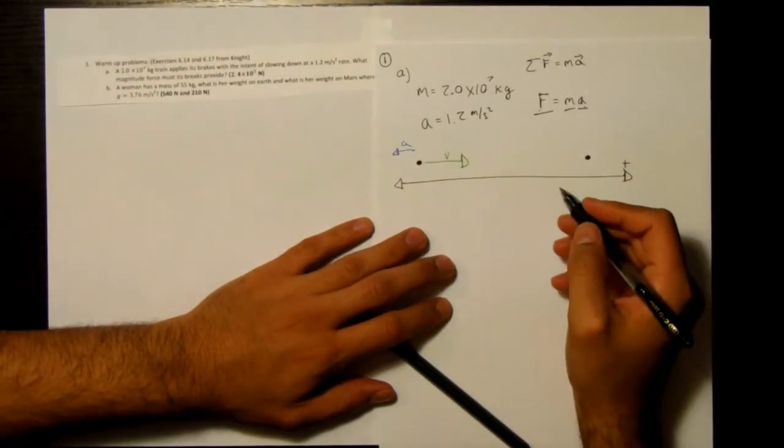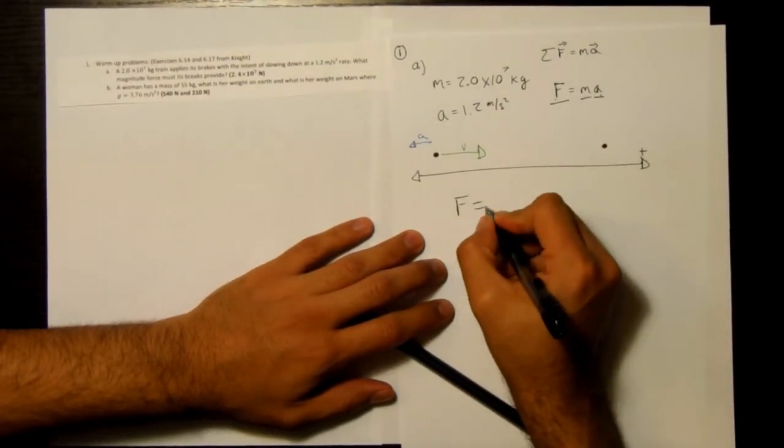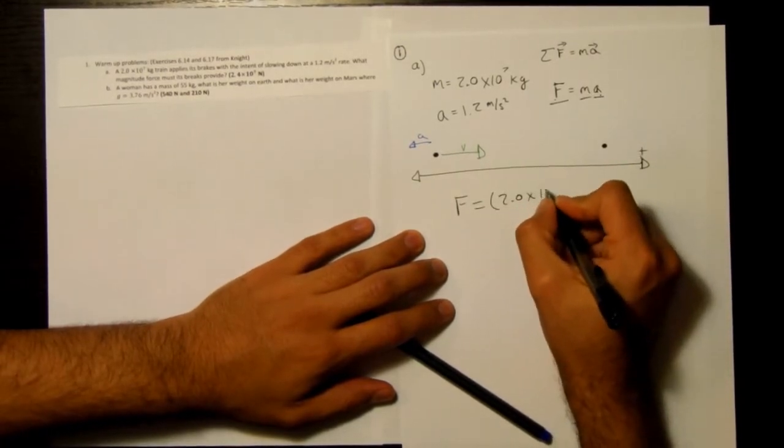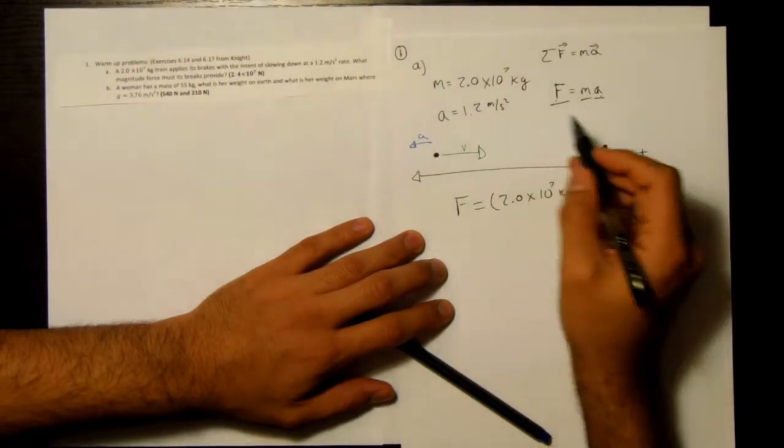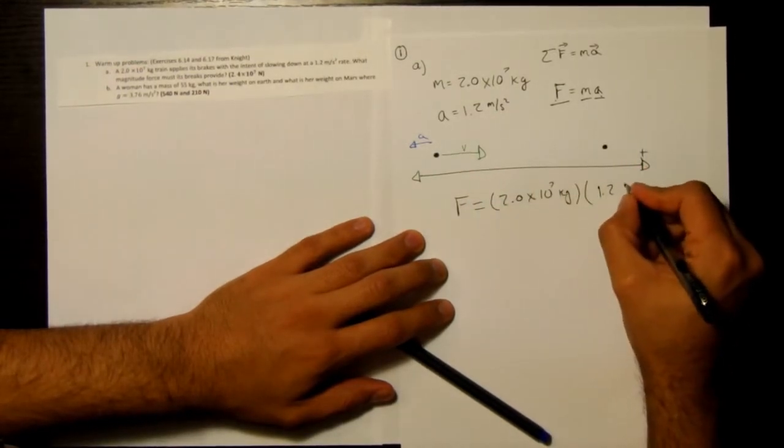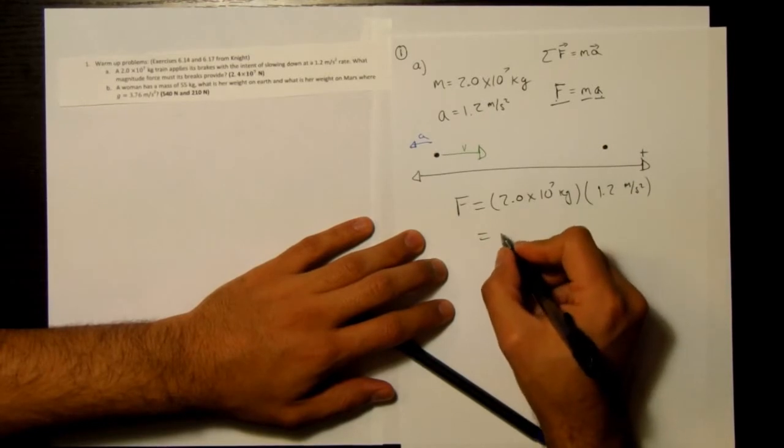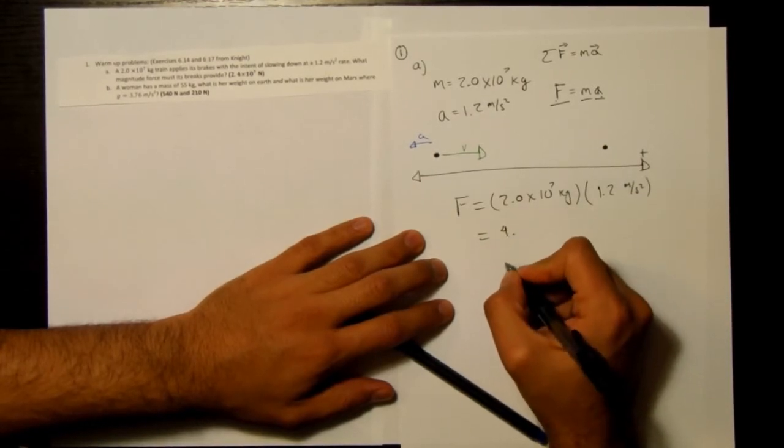All we've got to do to find the force is multiply my acceleration by the mass. Let me write this out. So we're going to have force equals mass, 2.0×10^7, times 1.2 meters per second squared. So 2 times 1.2 is...